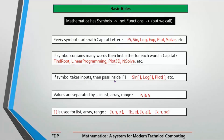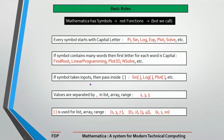The third rule: if a symbol takes input, pass the input inside square brackets. Whenever you use any symbol or function, you put the square bracket immediately after the name. For example, Sin[30], Log[value], Plot[...]. The fourth rule: values are separated by commas — in a list, array, or range, all elements must be separated by commas.